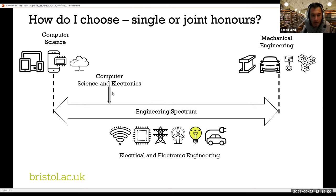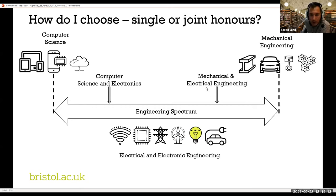We have a degree called computer science and electronics, which joins pure computer science and pure electronic engineering together. We also have another degree called mechanical and electrical engineering, which is a combination of mechanical and electrical engineering. Both of these topics are very trendy these days.